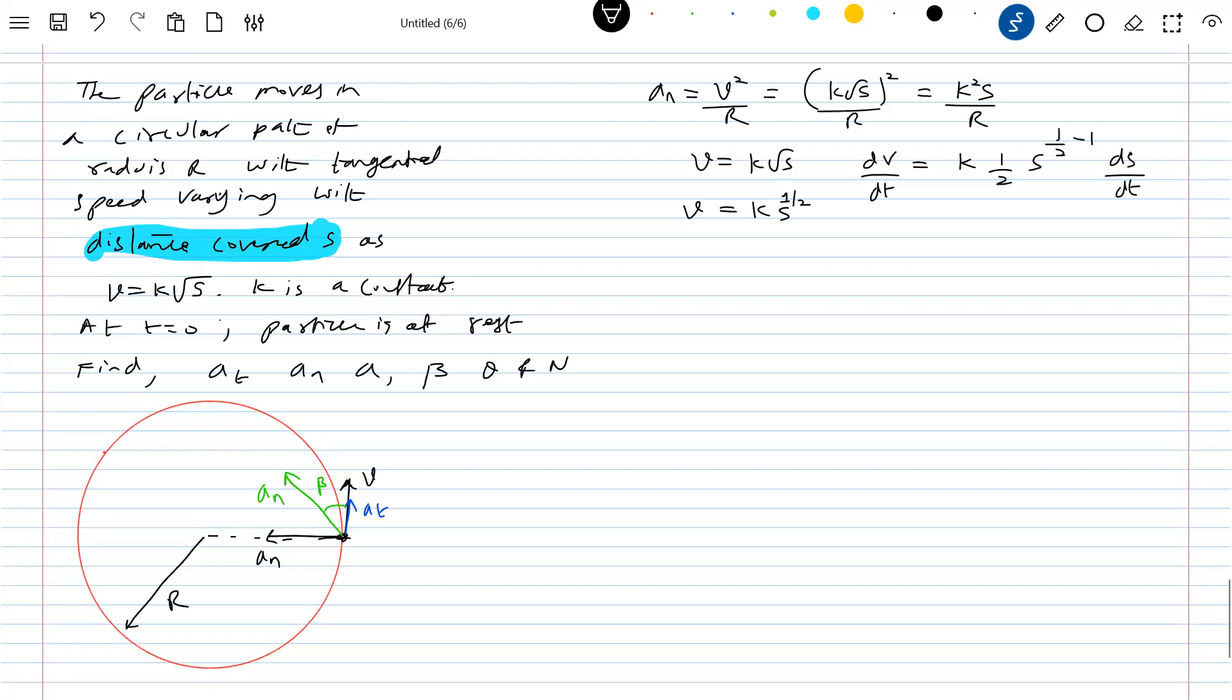Look at the mathematics. So dV by dt is what? You can write it as tangential acceleration. K by 2, 1 by 2 minus 1, so this will become root S. dS by dt. Again, it will become V. Try to see this.